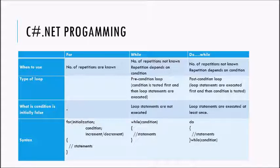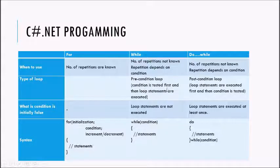The while loop and do-while loop are generally used when you don't know the exact number of repetitions and the repetition depends on some condition. The while loop is also called a precondition loop, which means the condition is tested first.